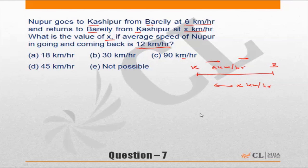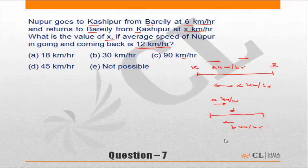This can be done directly with a formula. If the distance between A and B is fixed as d, and in one direction you have an average speed of a kilometers per hour and on the return you have b kilometers per hour, then the overall average speed for the entire journey is 2ab upon a plus b. In this question, the onward journey is 6 kilometers per hour and the return journey is x kilometers per hour.